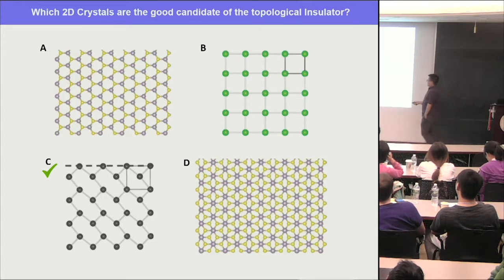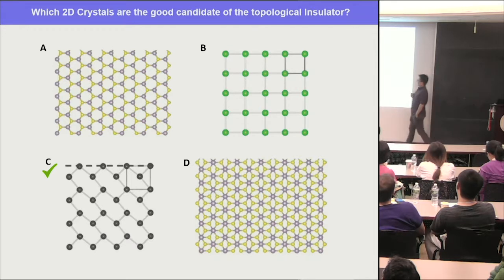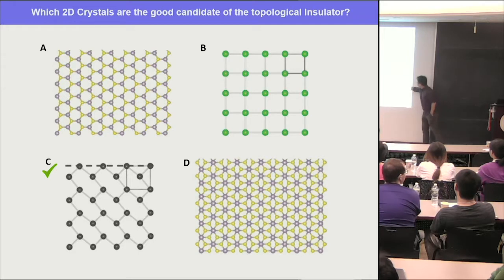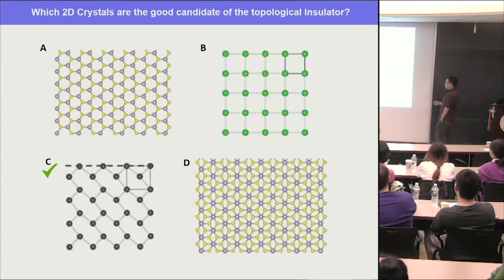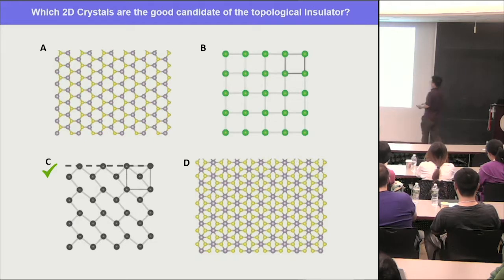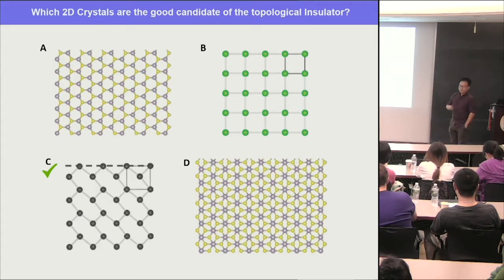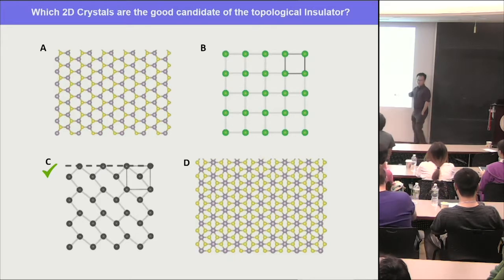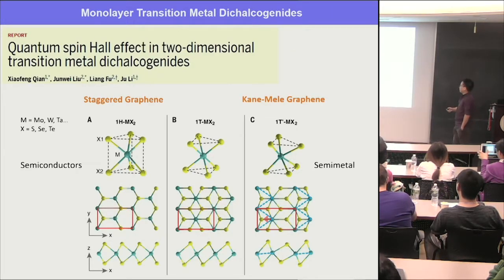What about lattice D? It has different atoms and more yellow atoms than blue in each unit cell, so NA ≠ NB. That's not what we want for a TI. However, in a bipartite lattice with NA ≠ NB you often have strong correlations — interesting but different physics. This 1T structure of TMD is what I've been interested in.